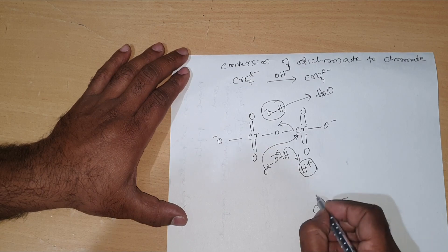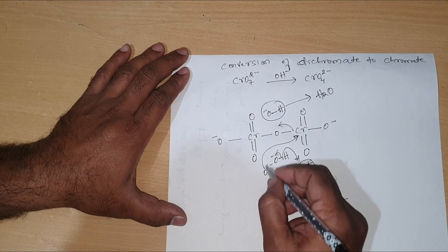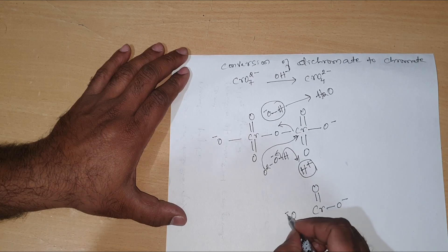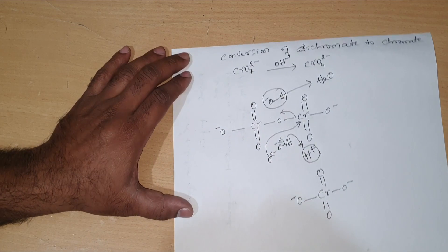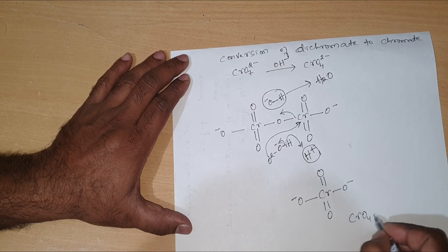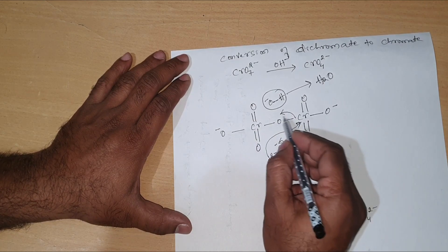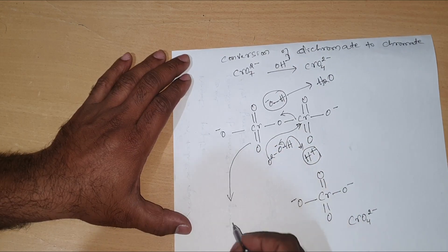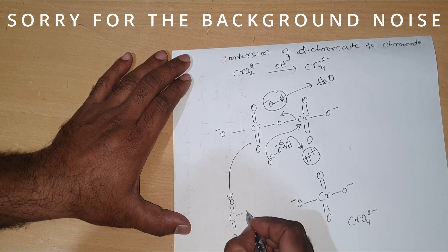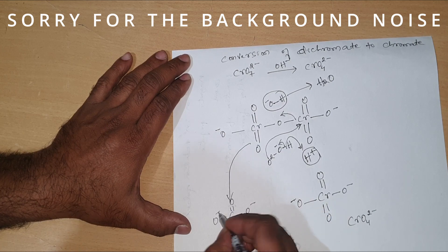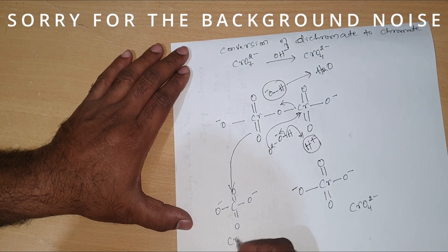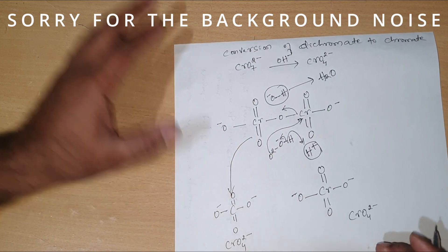The O²⁻ forms bonds with this chromium to produce the first chromate ion, CrO4²⁻. One negative charge stays on the incoming O²⁻ and the other negative charge forms a bond with chromium. The oxygen that was the bridge, now carrying the bond as a negative charge, forms a bond with the other chromium to give the second chromate ion, CrO4²⁻.